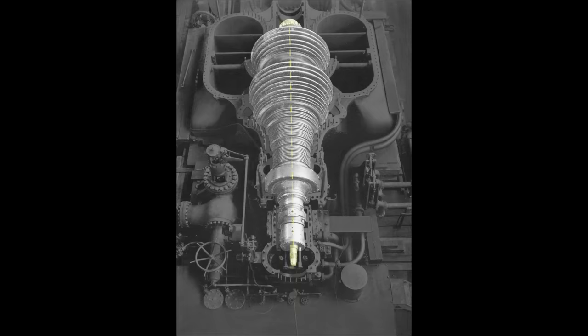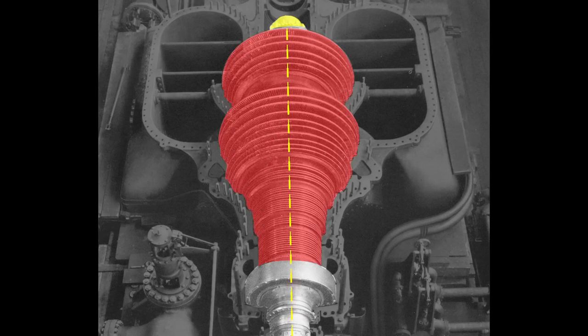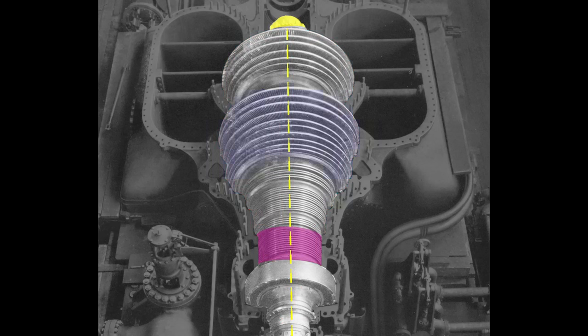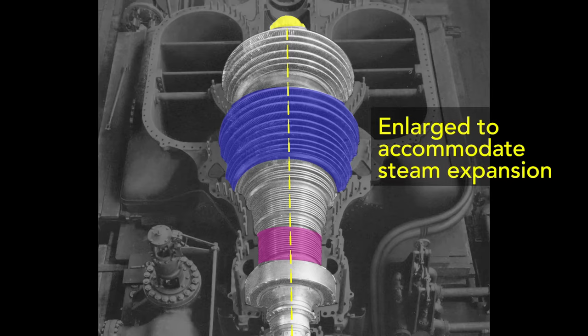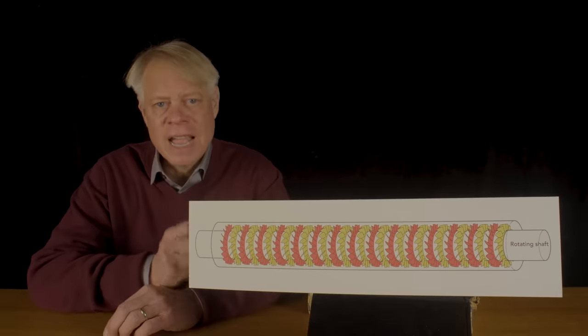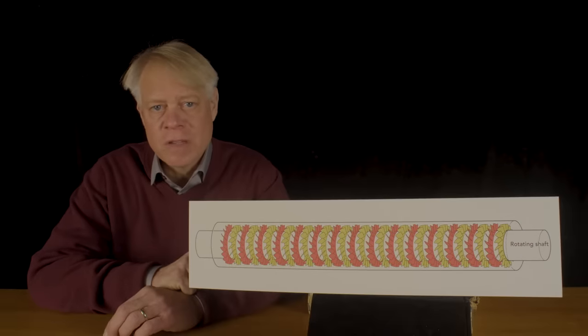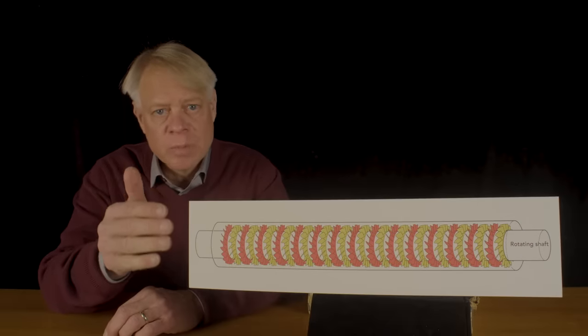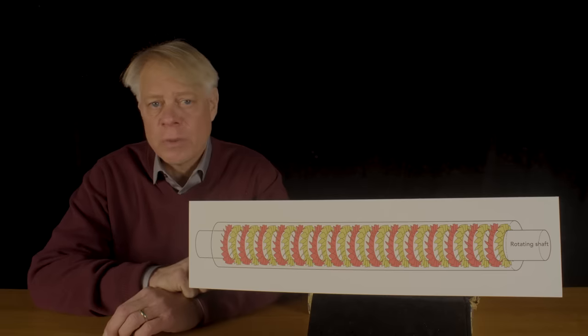In this turbine, the shaft runs from the bottom of the photograph to the top, and steam enters from here. The bladed wheels are here. Notice the size difference between this section and this section. As the steam moves through the turbine it expands, and to accommodate that expansion, Parsons enlarged the spacing and the diameter of the bladed wheels. This highlights that Parsons faced an astronomical number of dimensions and configurations of wheels, blades, and every other design variable in his turbine.